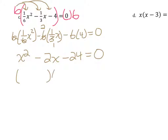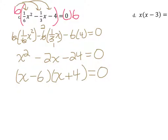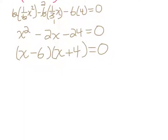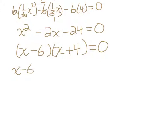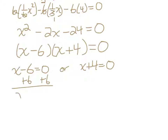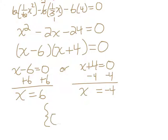Let's factor. I put an x here and an x here. I want two numbers that multiply to give me negative 24 but add up to negative 2 — those are negative 6 and positive 4. Now I have two factors that multiply to give me zero. By the zero factor property, I set each factor equal to zero: x minus 6 equals 0, or x plus 4 equals 0. Adding 6 to both sides gives x equals 6, and subtracting 4 from both sides gives x equals negative 4. My solution set is 6 and negative 4.